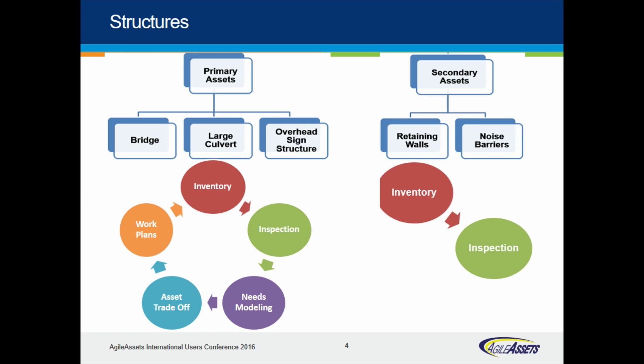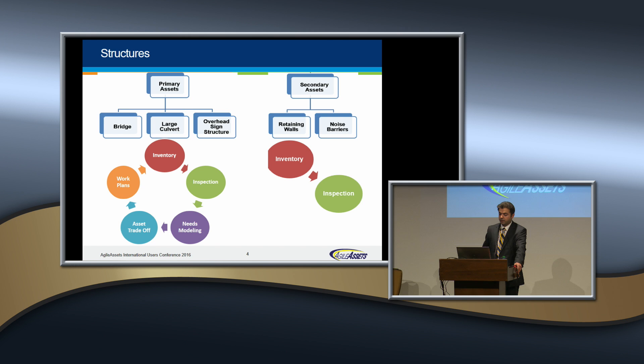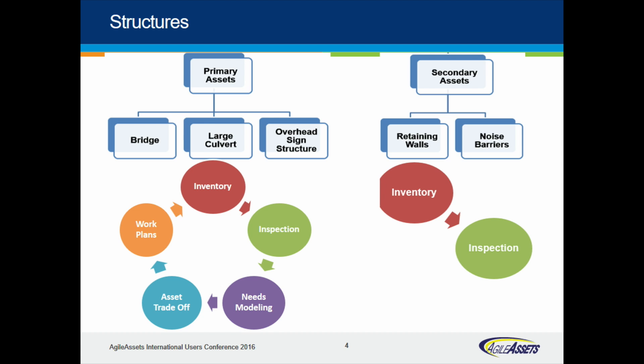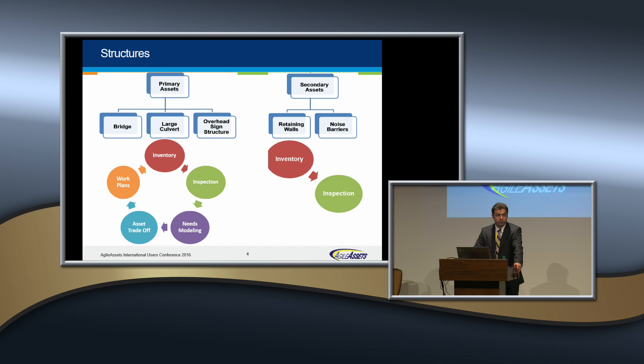We have different workflows to manage each category of assets and structures. For primary assets, we have inventory inspection, needs modeling, asset trade-off, and work plans. Secondary assets have a more simplified process. We have another session, S25, that Amir will present with more details about secondary assets and how they are handled inside Agile.